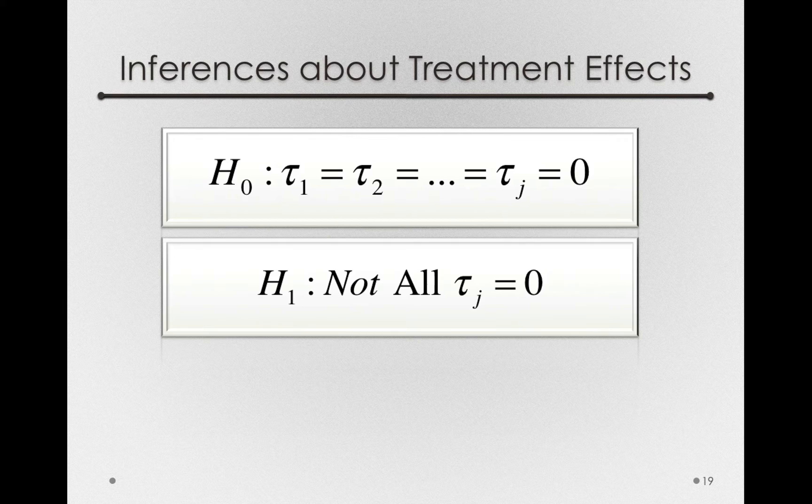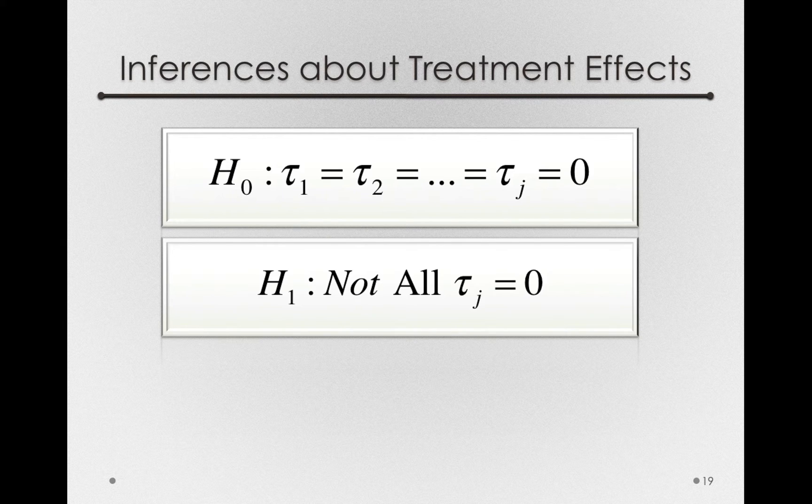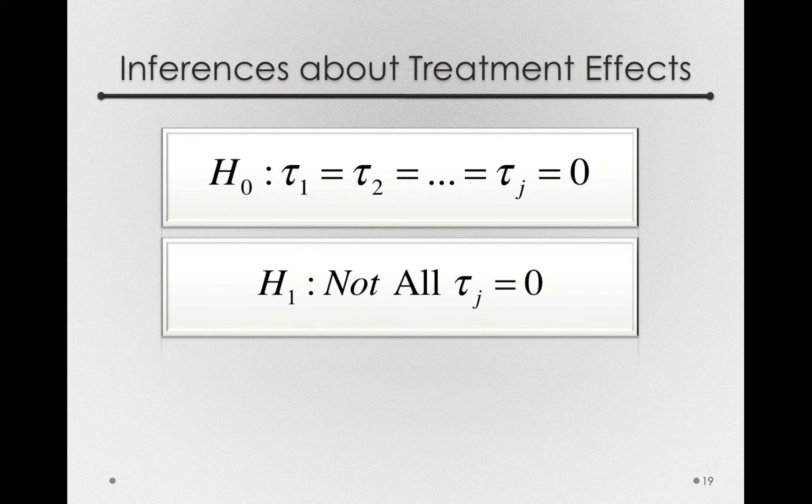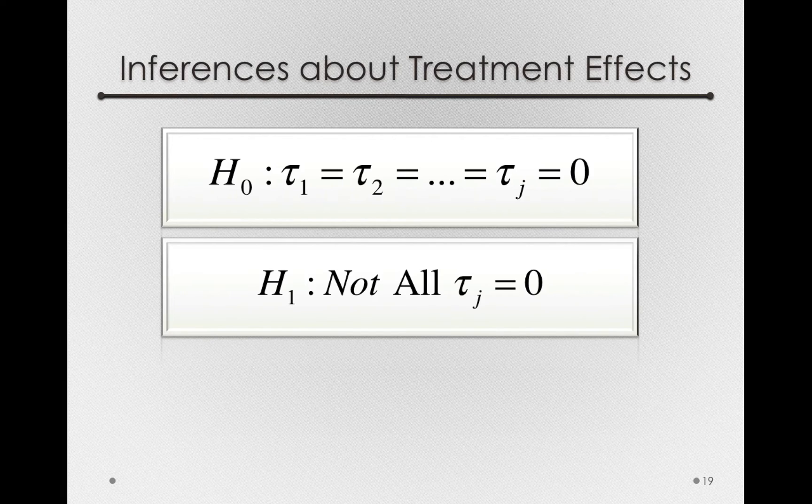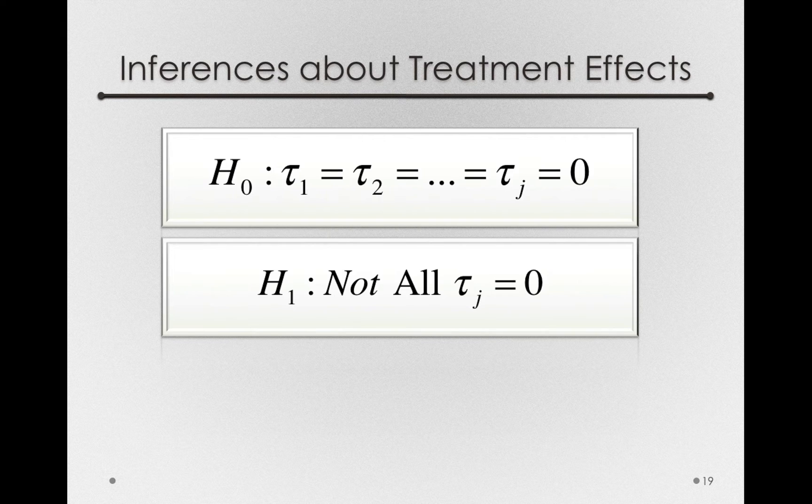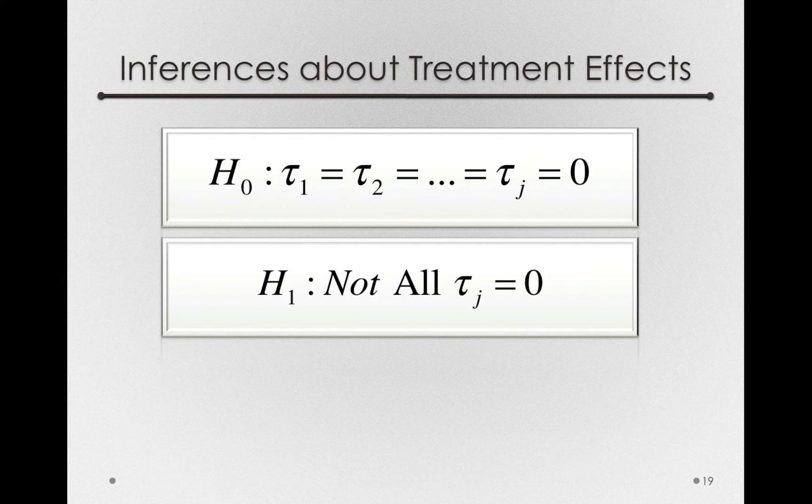So what we need is a way to tell at once whether all those treatment offsets are likely to be zero or not likely to be zero. Remember, we're forming a sample model, and so our T sub Js will all be non-zero, just due to sampling error alone. So what we'll want to know is, are the treatment offsets more different from zero than we should expect by random chance?